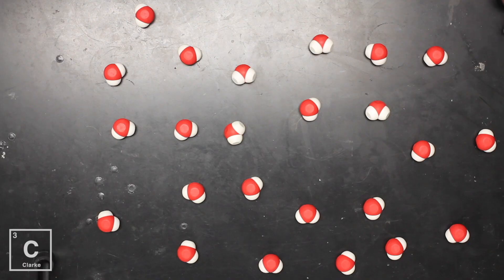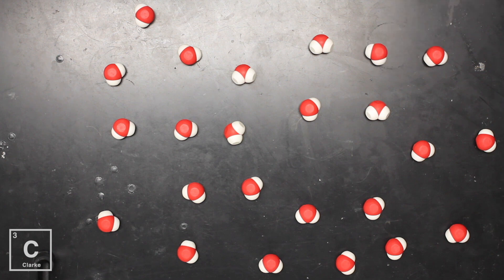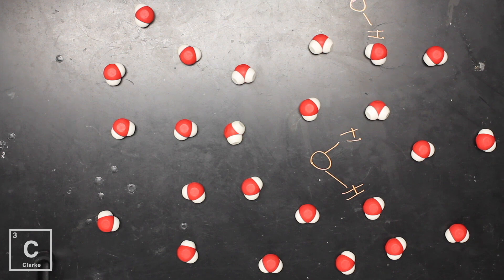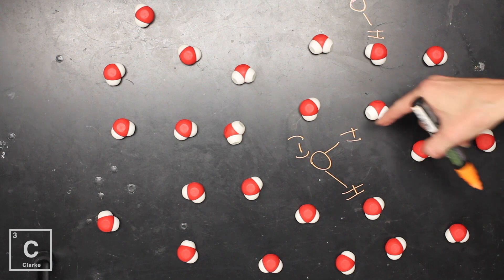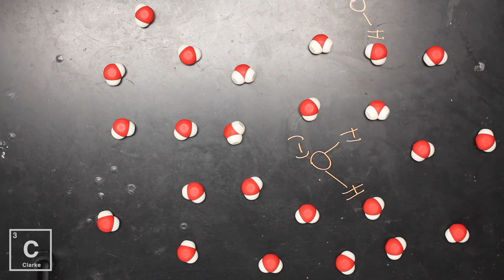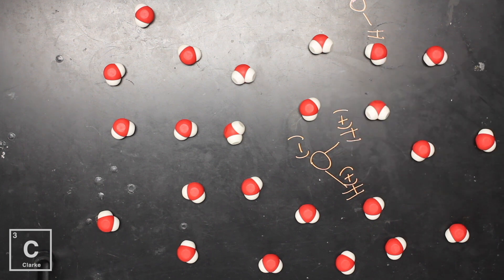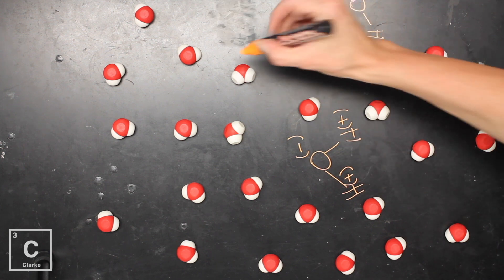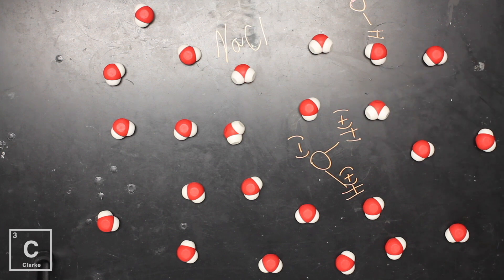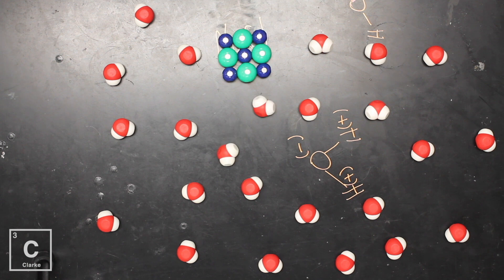These are water molecules, H₂O — two H's, one O. And let's remember that water is polar. Oxygen is more electronegative, so it's going to pull the electrons closer to itself and feel a little bit negative. Hydrogen, since the electrons were pulled away, is going to feel slightly positive. For our ionic compound, we're going to use salt, NaCl, where Na is a metal with a positive charge. Chlorine is a non-metal with a negative charge. But when it's in its crystal structure, those charges are all locked up.